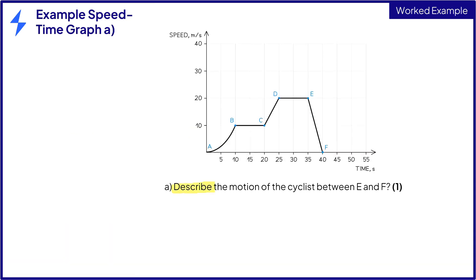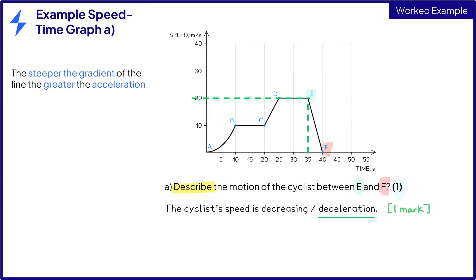Part A. Describe the motion of the cyclist between E and F for one mark, hence the answer will require a description of one property only. Draw lines on the graph from E to the vertical and horizontal axes so it is easier to see that the speed decreases from E to F. So the cyclist's speed or velocity decreases, which is also known as deceleration. One mark. The steeper the gradient of the line on a velocity-time graph, then the greater the acceleration or deceleration.